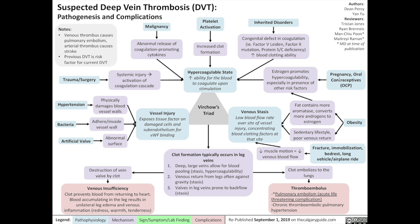Finally, pregnancy and oral contraceptives (OCPs) contain estrogen, resulting in a higher estrogen state in the body, which promotes hypercoagulability, especially in the presence of other risk factors.